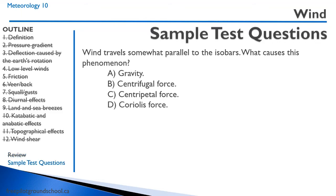Sample test question: Wind travels somewhat parallel to the isobars — what causes this phenomenon? This occurs because of the rotation of the Earth. Gravity moves downward, not horizontally, so that's not correct. Centrifugal or centripetal force are not correct. The answer is D — Coriolis force, which is associated with the rotation of the Earth.